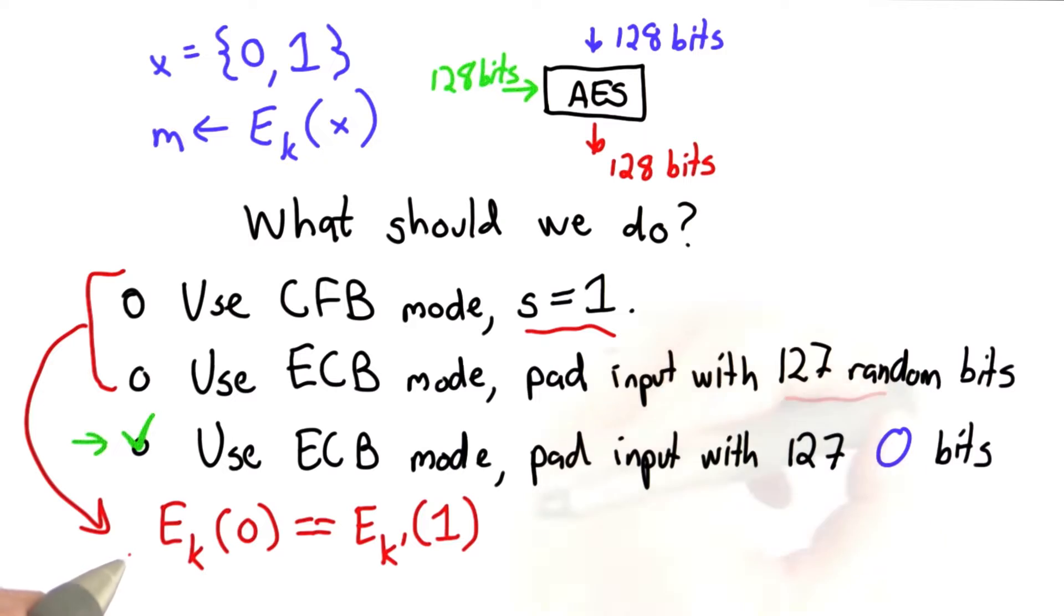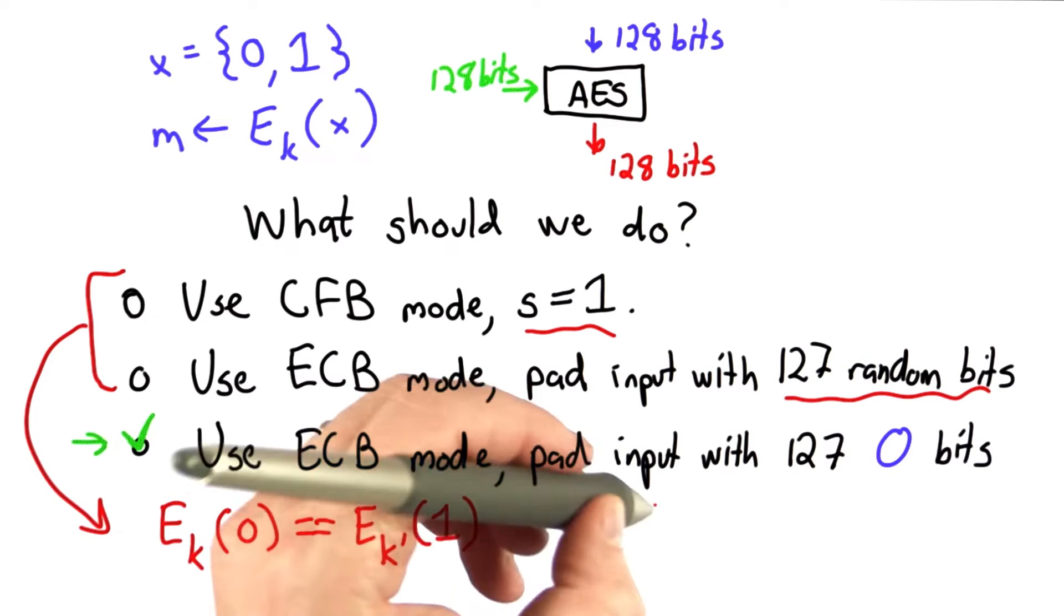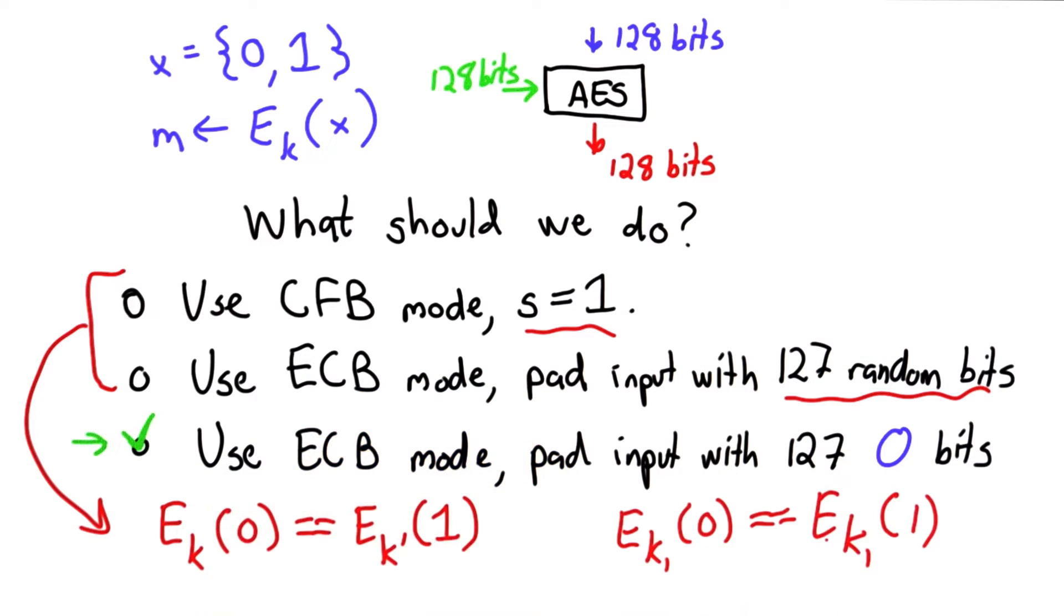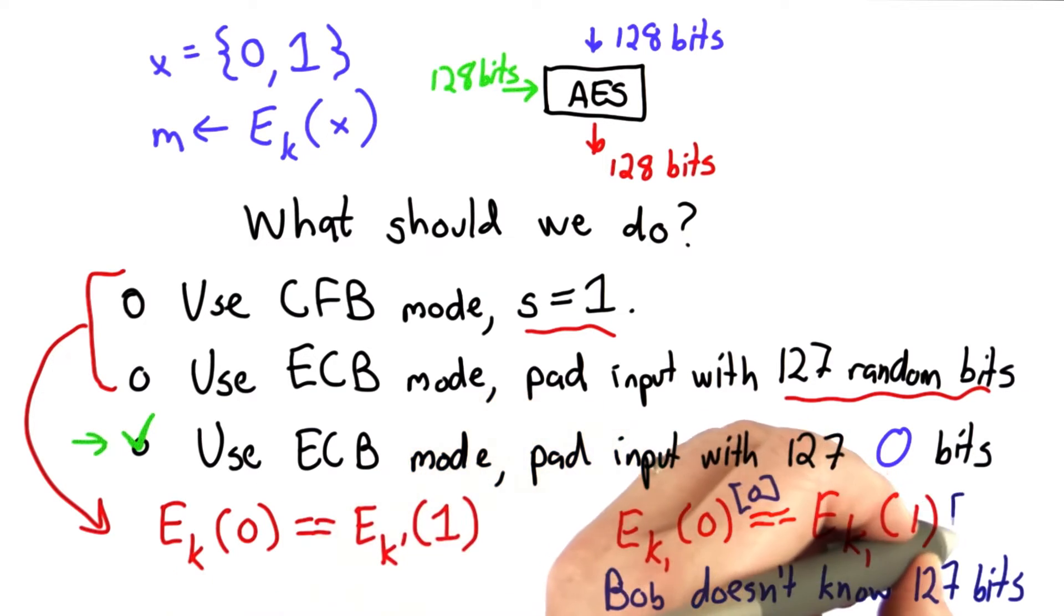For the second one, it's not easy to find exactly this property. Finding this equality would be just as hard as with the third property, but the problem is Bob does not know the 127 bits that are added. So Bob's only looking at the first character here, and finding two keys that have this property would be very easy.